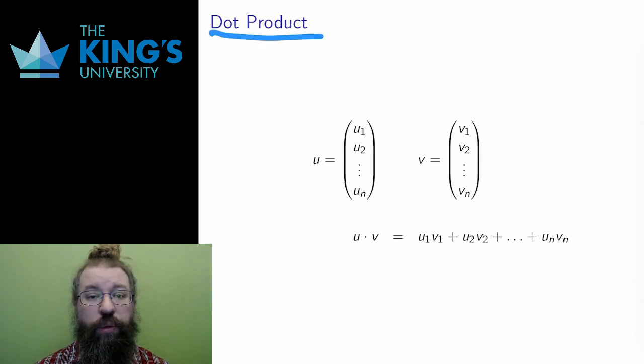It is called a product or multiplication, but it is an entirely new kind of multiplication. It takes two vectors, so it is a multiplication of vectors. But instead of producing a new vector, it produces a scalar. For this reason, in other mathematical contexts, it is often called the scalar product.